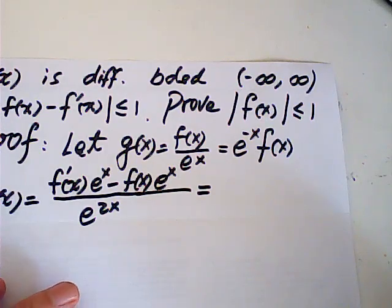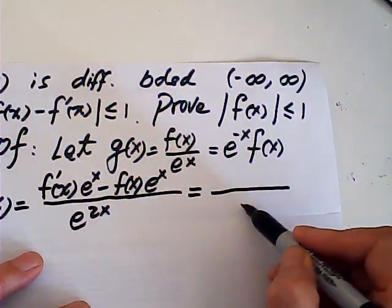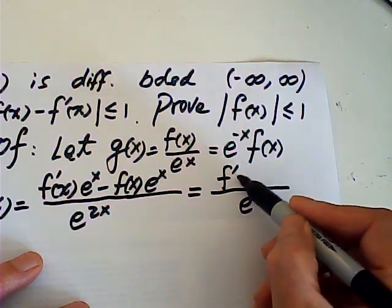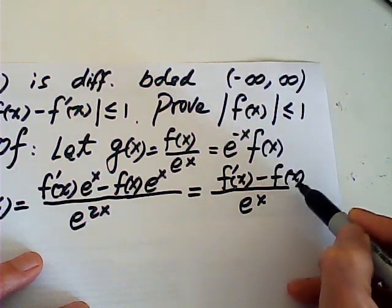This one is equal to, after canceling e to the x, this is over e to the x, f prime minus f of x.